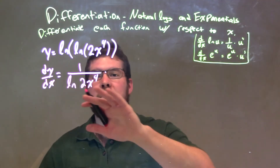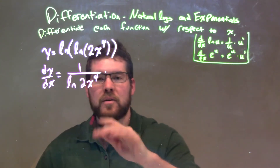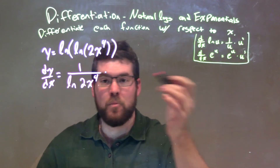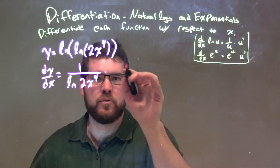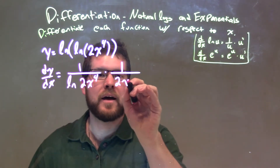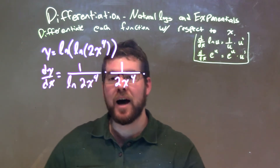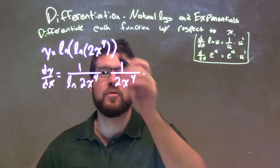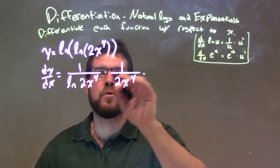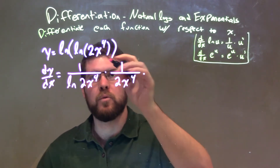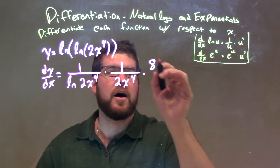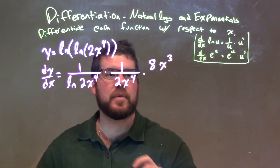The derivative of the inside involves this natural log. The derivative of natural log is 1 over what's on the inside, so again by chain rule we have 1 over the inside, which is 2x to the fourth power, times the derivative of 2x to the fourth power. By the power rule, 4 times 2 is 8, so we get 8x to the third power.